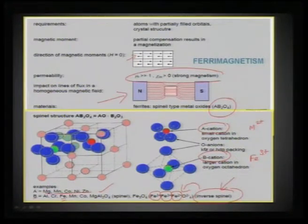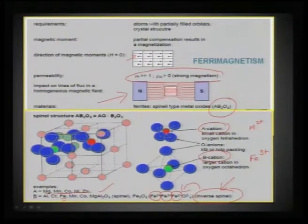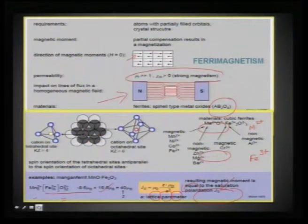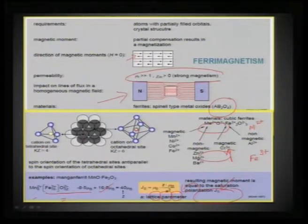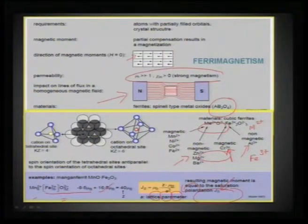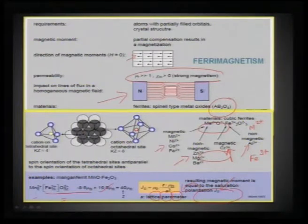In most ferrites, the occupation of ions can be distributed between A and B sites. This categorizes a group of compounds where ferrimagnetism is operative. You can substitute with chromium to still get a cubic ferrite that is magnetic, but substituting aluminum in place of iron makes a non-magnetic ferrite. Non-magnetic ferrites are also obtained when the A site is substituted with zinc, magnesium, or barium, whereas magnetic ferrites result from Mn²⁺, Ni²⁺, Co²⁺, and Fe²⁺.